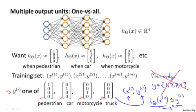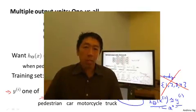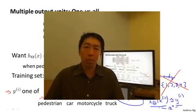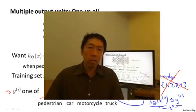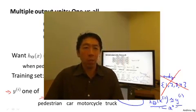So that's how you get a neural network to do multi-class classification. This wraps up our discussion on how to represent neural networks, that is, on our hypothesis representation. In the next set of videos, let's start to talk about how to take a training set and how to automatically learn the parameters of the neural network.